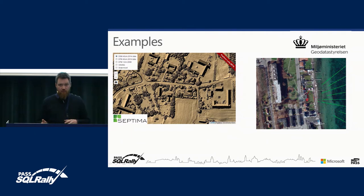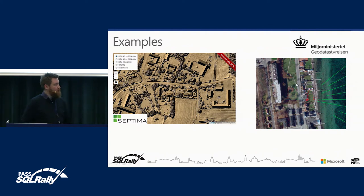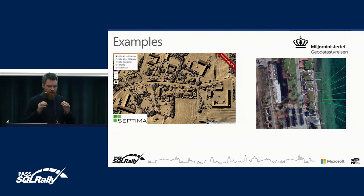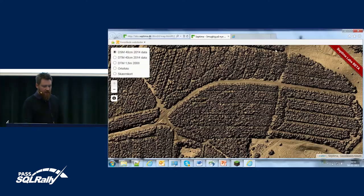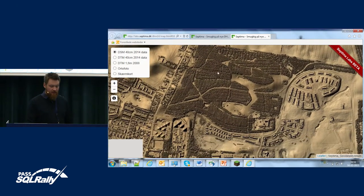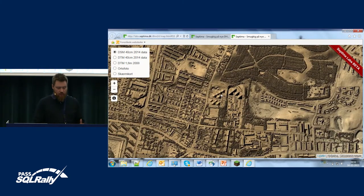Another example from the public sector is the Ministry of Taxation. As part of this program, they became aware that we had this huge chunk of data and asked us: could we find houses which had a view to the ocean? Because houses with a view to the ocean are worth more than houses without, so could you tell us where they are? And using these data, it is actually a very simple analysis to make this view analysis.